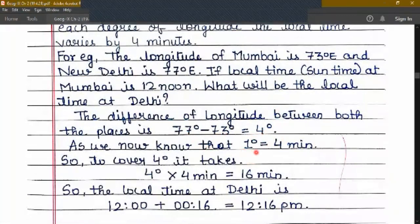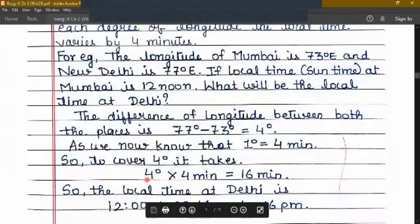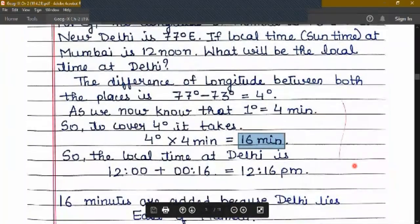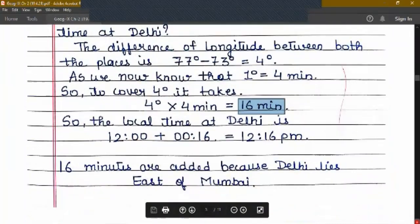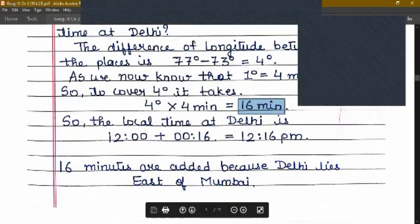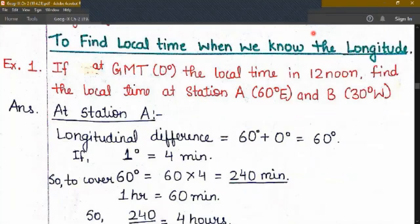We know that 1 degree is covered in 4 minutes. So to cover 4 degrees, it will take 4 into 4, which is overall 16 minutes. So the local time at Delhi is 12 plus 16 minutes, that becomes 12:16 pm. 16 minutes is added because Delhi lies east of Mumbai. Now let us practice a few more questions to find out local time when we know the longitude.